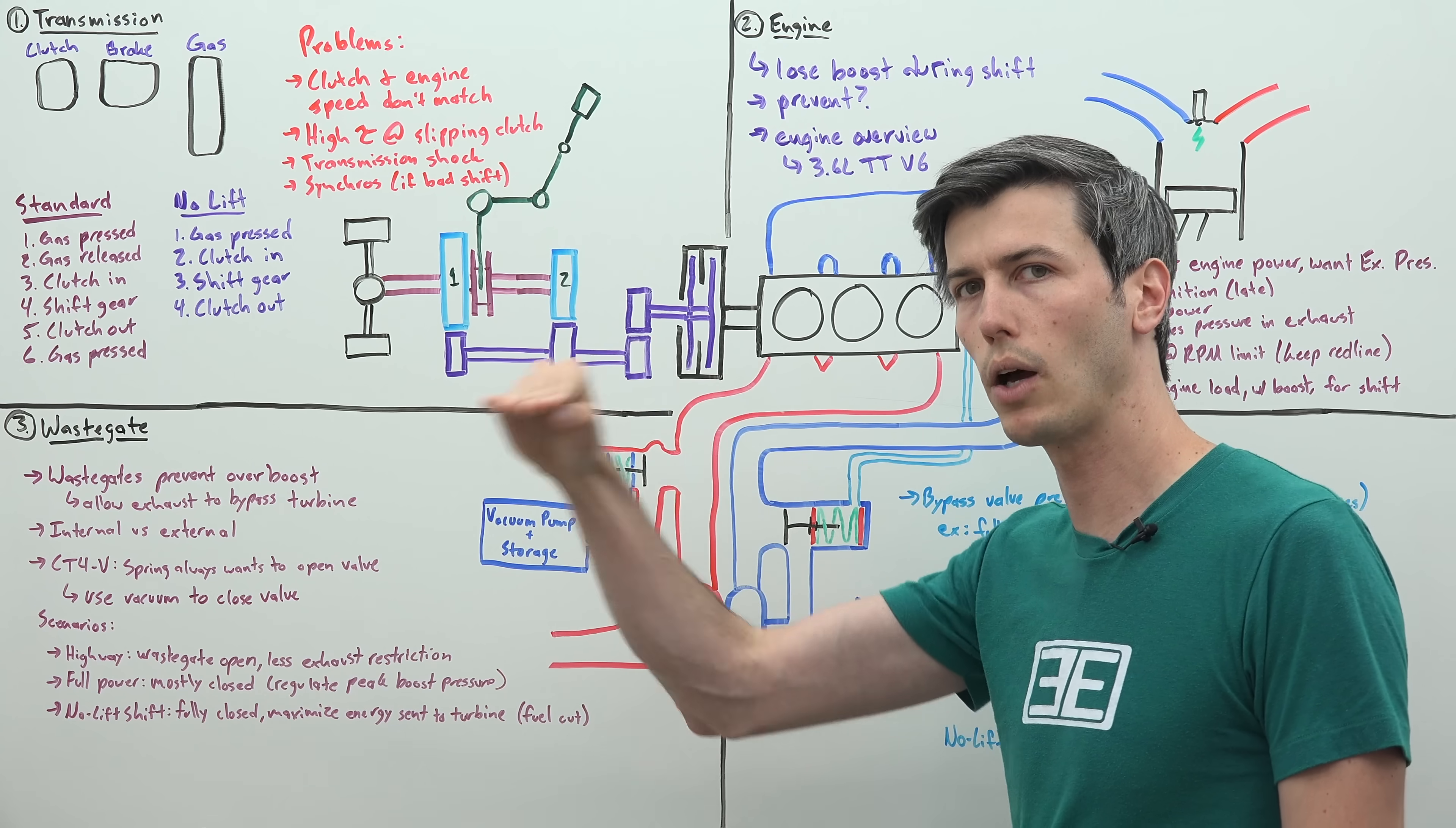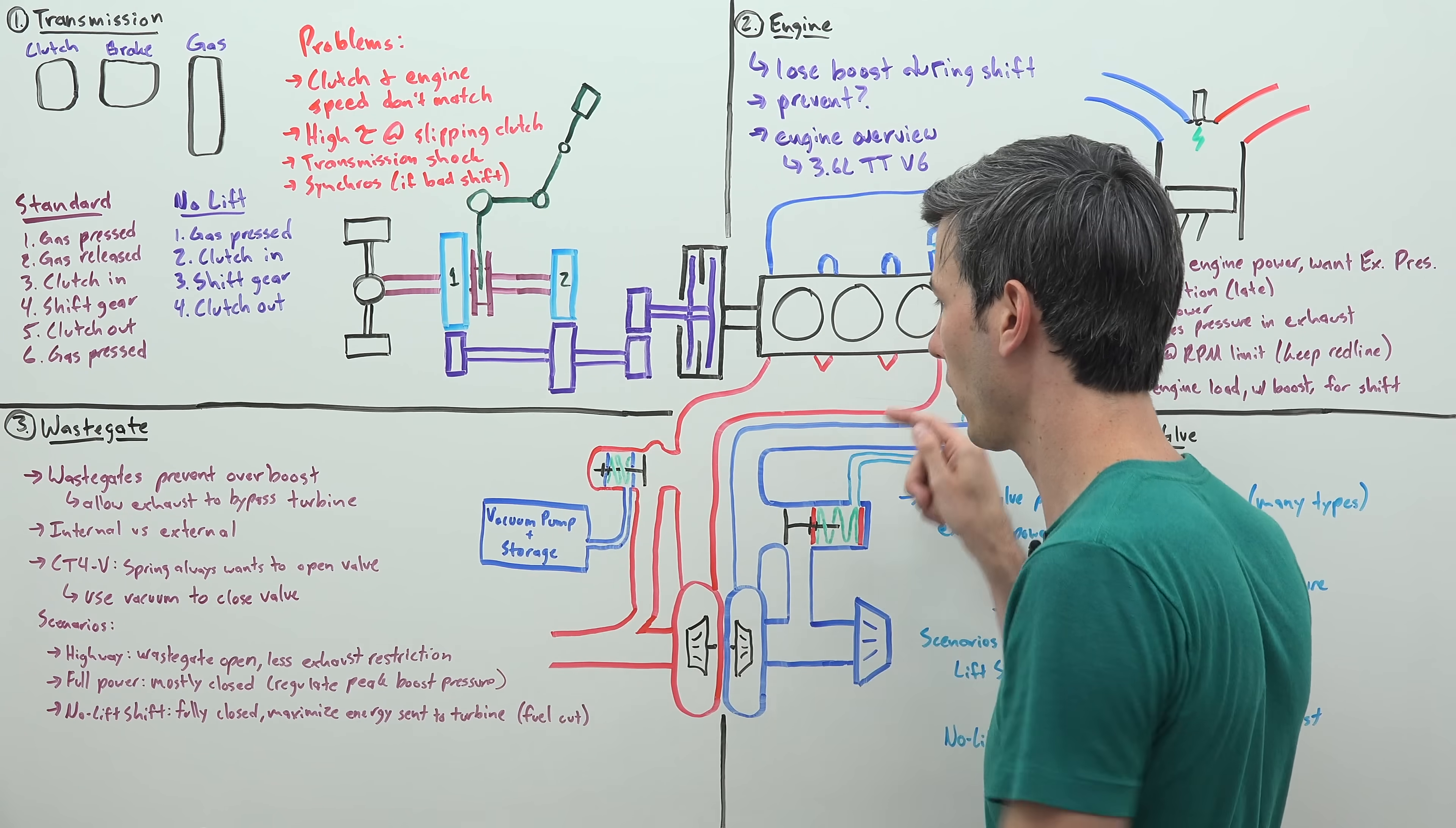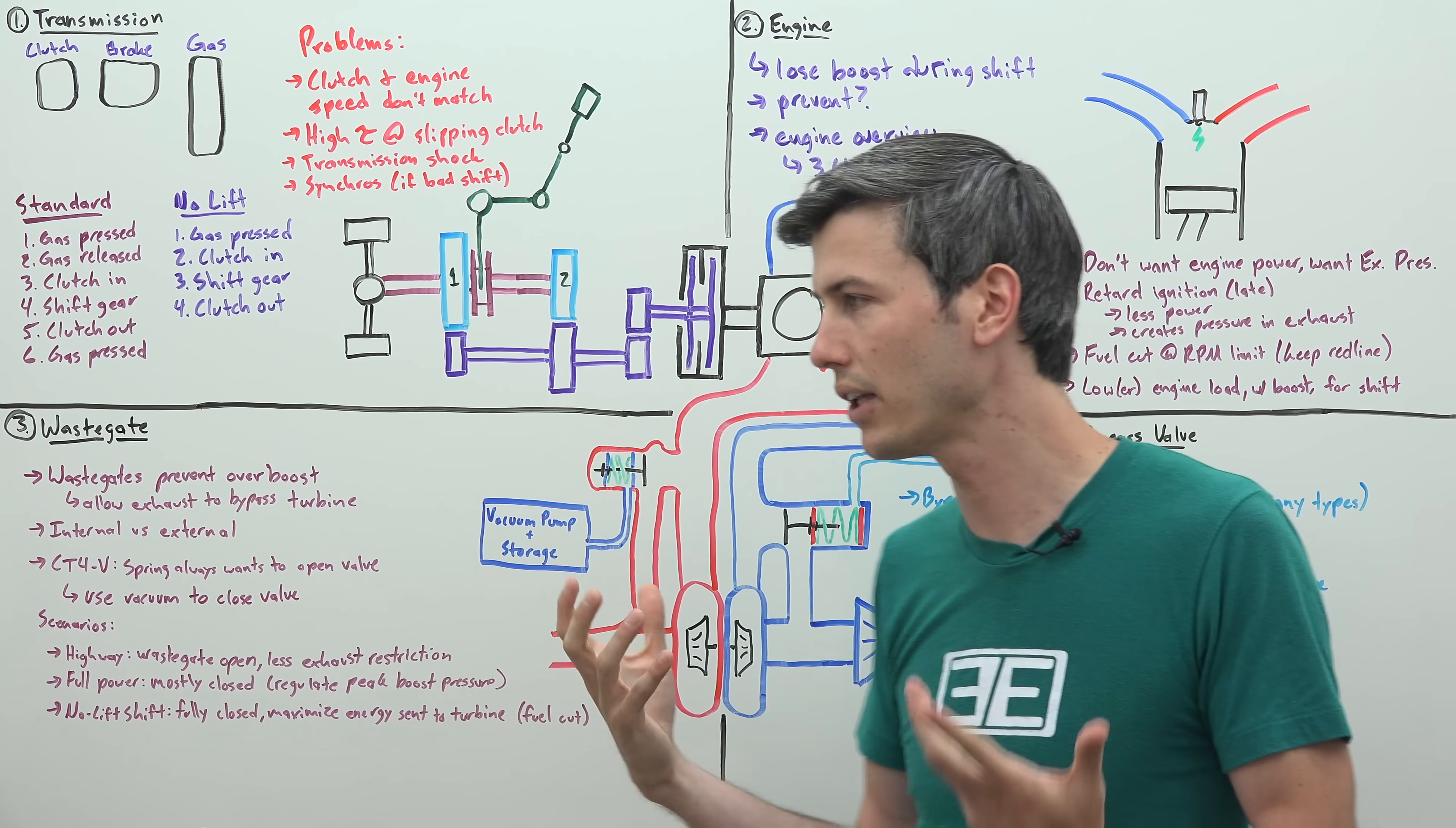And then for a no-lift shift, what are you doing? Well, you're actually fully closing this valve so that all of the exhaust gases are forced to go through the turbine. Because remember, we're having to cut fuel if you're sitting at that red line. If you're taking a really long time for this shift, and even if you're not, realistically, like, say a shift takes a quarter of a second...